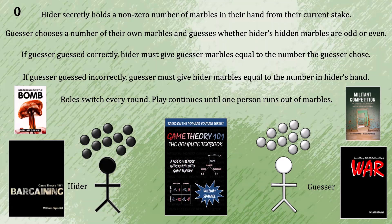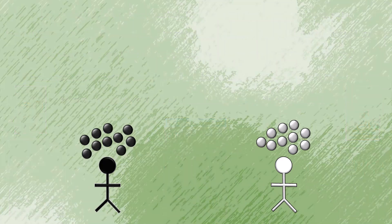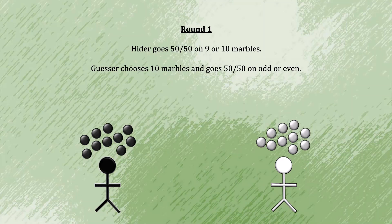Are you ready for the solution? Okay, here goes. In the first round, the hider should go 50-50 on placing 9 or 10 marbles in their hand. And the guesser should place 10 marbles in their hand and go 50-50 on the guess of odd or even.